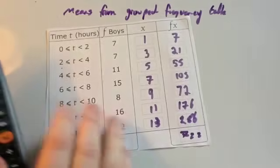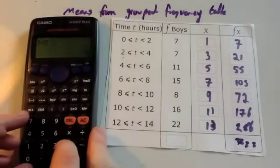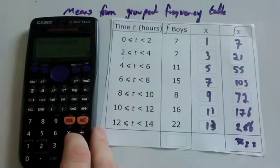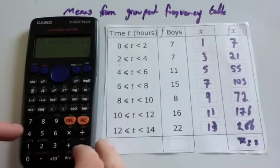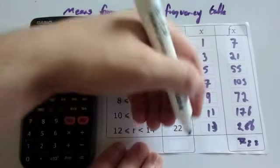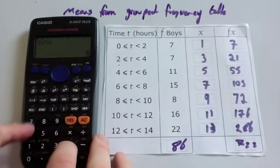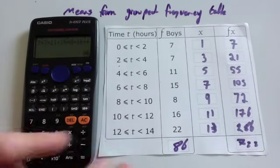Then you're going to add together how many boys there are. So we're going to add 7 plus 7 plus 11 plus 15 plus 8 plus 16 plus 22. All together there's 86 boys. Let's double check that. 7 plus 7 plus 11 plus 15 plus 8 plus 16 plus 22 is 86.